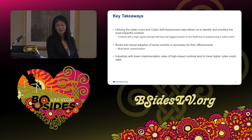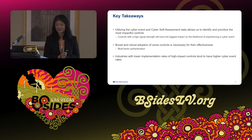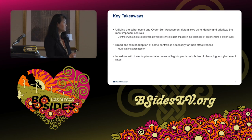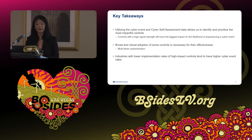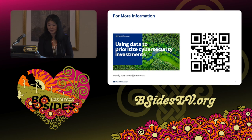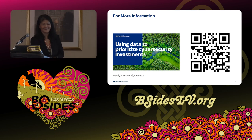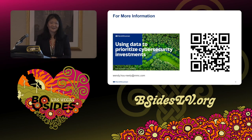Key takeaways: use self-assessment data to identify the most impactful controls. Broad and robust adoption of controls is necessary for effectiveness — MFA completeness was a clear example. Industries with lower implementation rates of high-impact controls have higher cyber event rates. More information on control priorities is available, and my email address is on the final slide if you'd like a copy of the presentation.